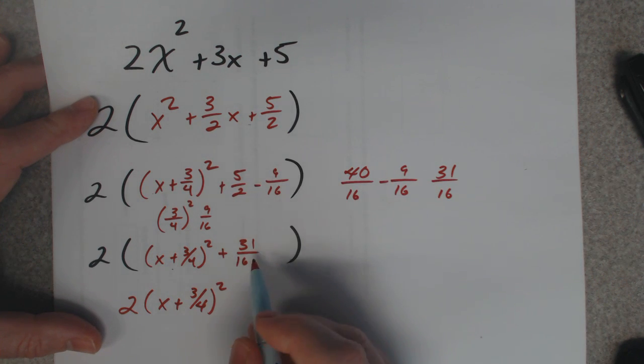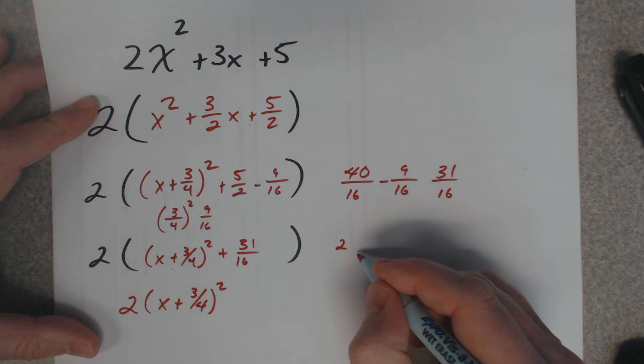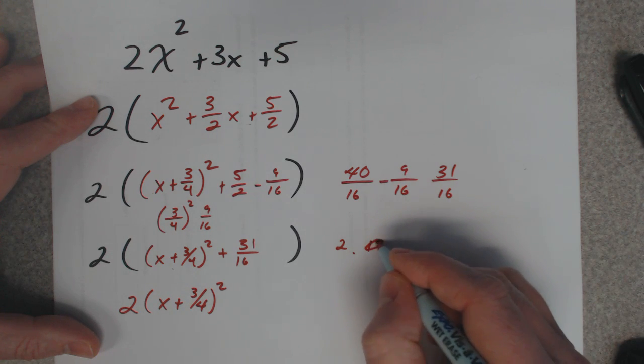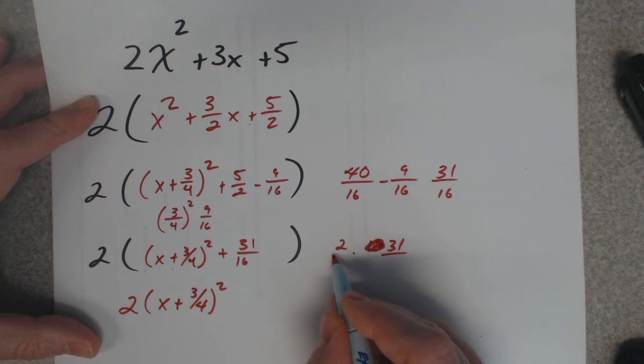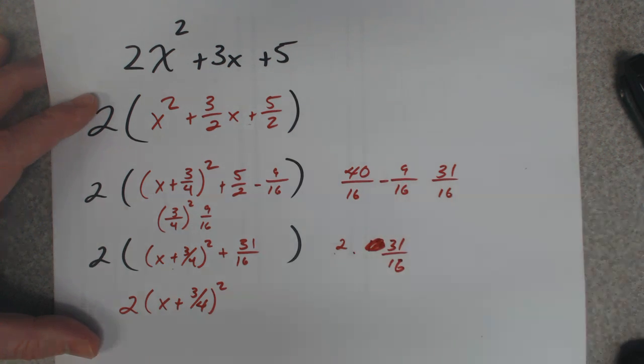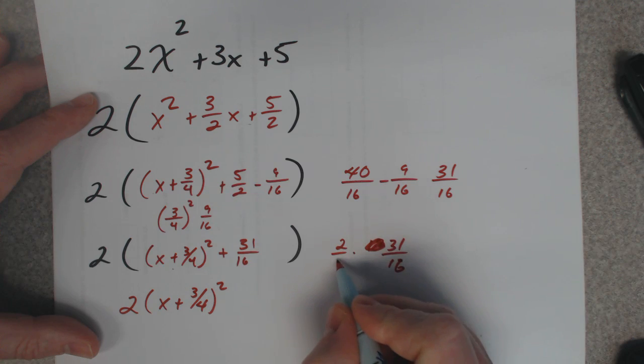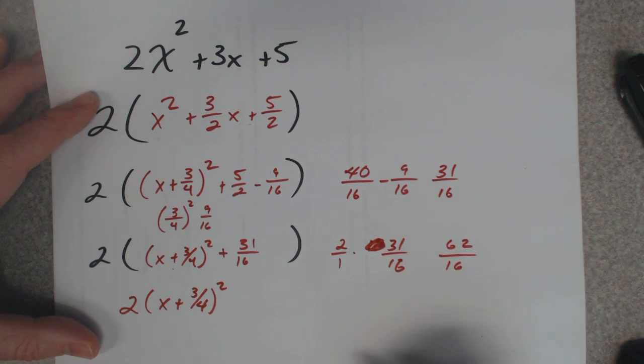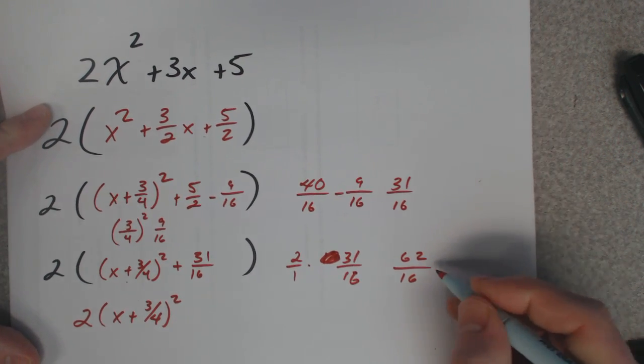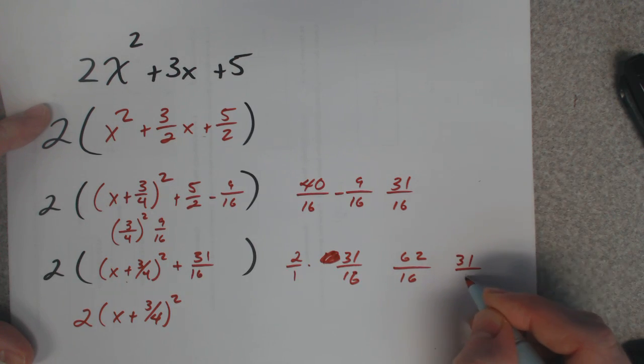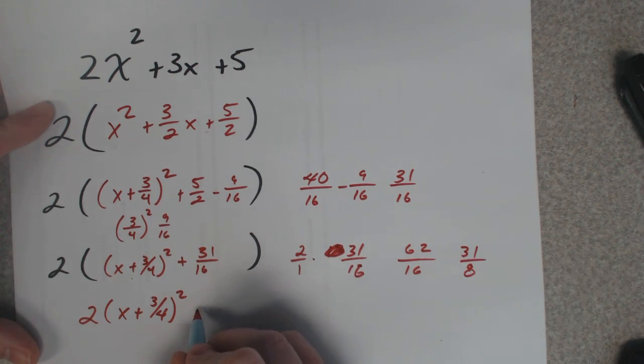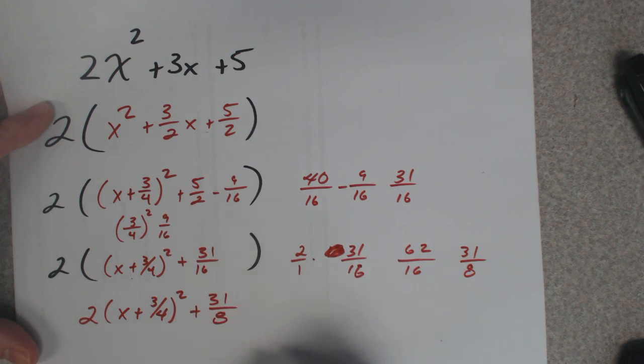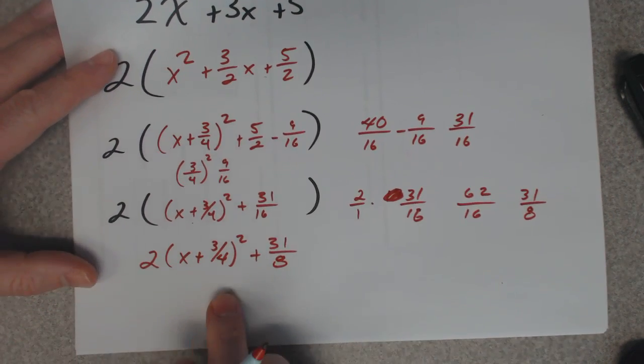And then 2 times this guy, so 2 times 31 over 16. When you multiply a whole number times a fraction, this is like saying 2 over 1 – you multiply straight across. So 2 times 31 is 62, and 1 times 16 is 16. They're both even, so I can take a 2 out of both of them, so 31 over 8. You can use your calculator for that, but that's how you work with fractions by hand.